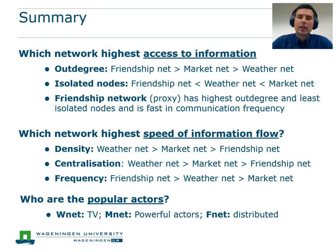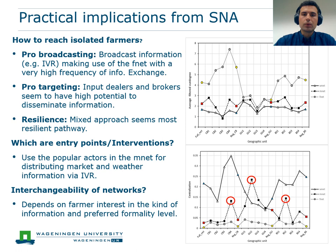The weather information network is dominated by TV as a non-human information source, whereas the market information network turned out to be the most important network from an intervention perspective, as here we found very influential human information centers — mostly brokers and input dealers. The farmer friendship network is highly decentralized and shows no outstanding farmers. The SNA results can help make analytically informed decisions on the choice of information entry points and broadcasting strategies to reach not only well-connected but also isolated farmers with weather and market information. To answer how to reach isolated farmers, we first have to ask whether to broadcast information or to target central actors.